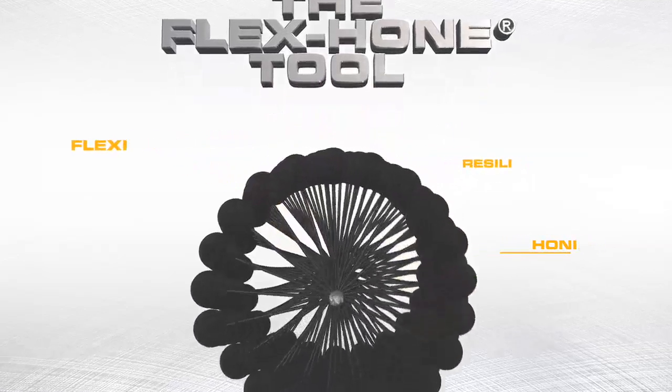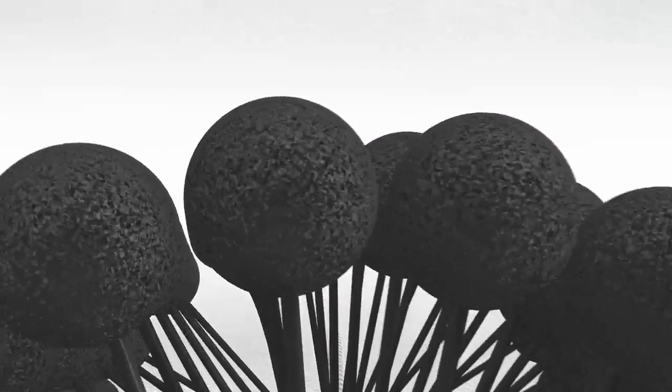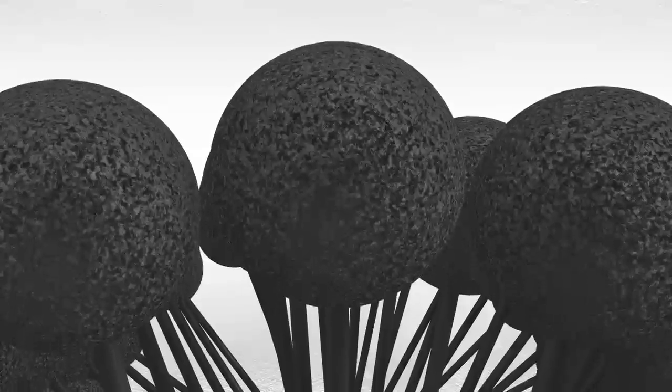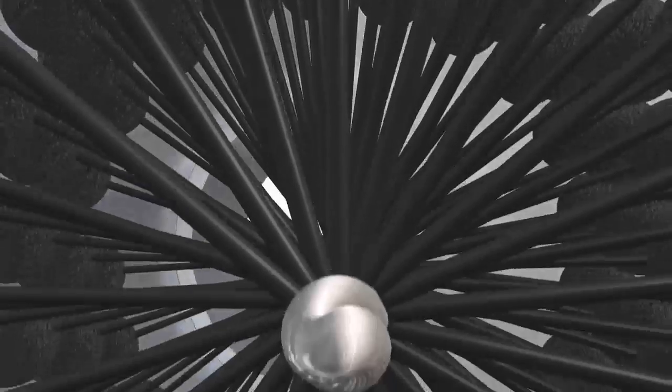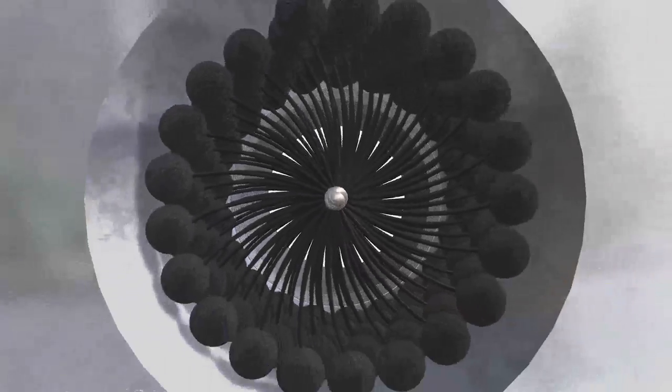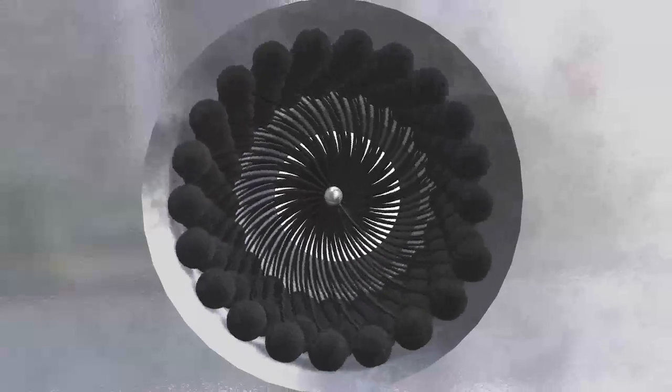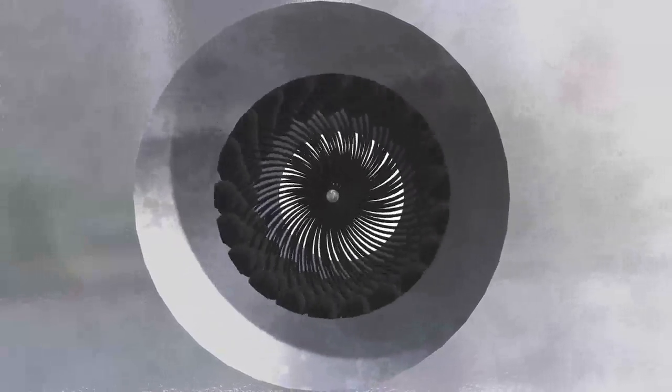The abrasive globules are bonded to the ends of flexible nylon filaments. Each have independent suspension that assures the Flex Hone to be self-centering, self-aligning to the bore, and self-compensating for wear.